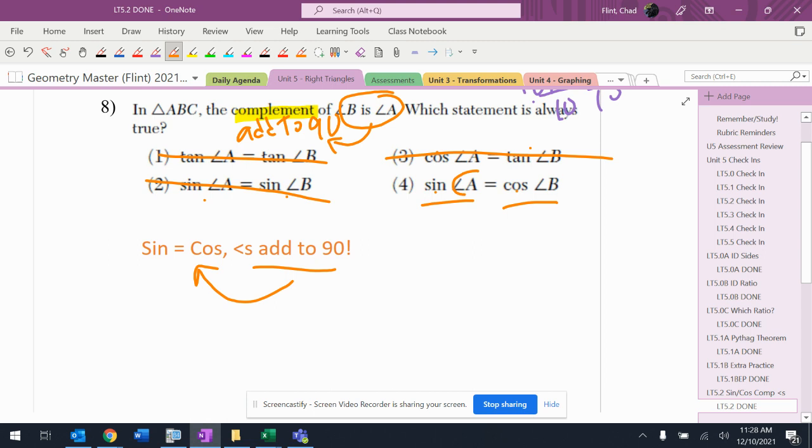When sine is equal to cosine, the angles add to 90. So that's exactly following the rule. That's exactly what I'm looking for.